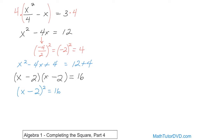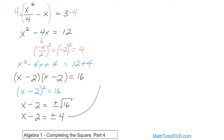We take the square root of the left, which just gives us x minus 2. The square root of the right-hand side is going to be plus or minus — which you have to add yourself — the square root of 16. So x minus 2 is equal to plus or minus the square root of 16, which is 4. So we can take that and we have two answers.